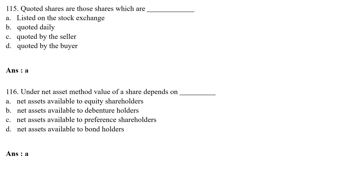Under the net asset method, the value of a share depends on — Option A: net assets available to equity shareholders; Option B: net assets available to venture holders; Option C: net assets available to preference shareholders; Option D: net assets available to bond holders. The correct answer is Option A — net assets available to equity shareholders.